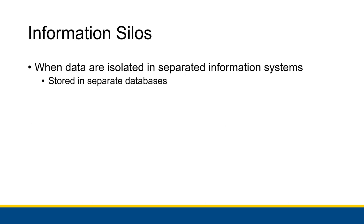An information silo, or sometimes a departmental silo, is when data are isolated in separate information systems — they're stored in separate databases. So in one organization, maybe sales and marketing has a separate database from accounting, which has a separate database from operations, which has a separate database from human resources, and so on. When those databases are completely separate with no interaction between any other department, that would be what's known as an information silo.